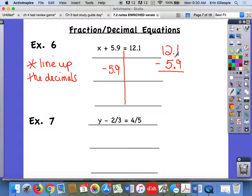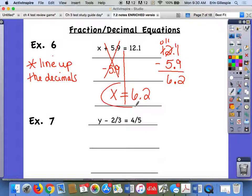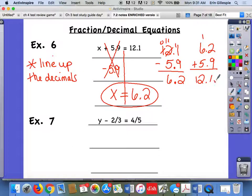So over here, that will cancel out and I'll just have X. Can't do 1 minus 9. 11 minus 9 is 2. Remember, you bring down the decimal in your answer. Can't do 1 minus 5, so I'm going to borrow again. So we get 6.2 for X there. And if you were to check it, 6.2 plus 5.9 gives us 12.1. So that checks out.